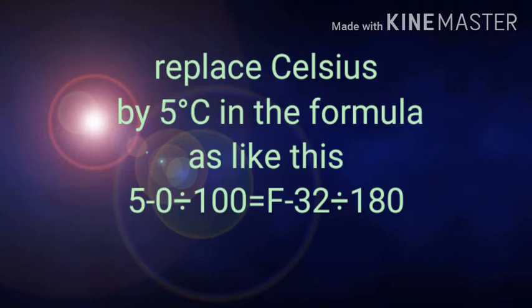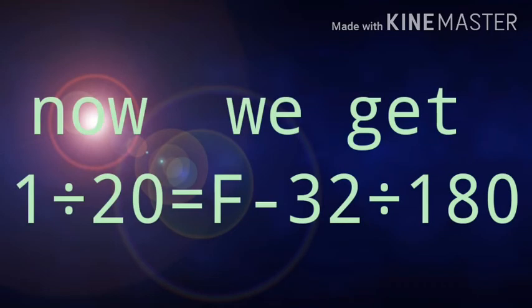Now we have to subtract 5 minus 0 and divide this 5 by 100, then we get 1 divided by 20 which is equal to F minus 32 divided by 180.